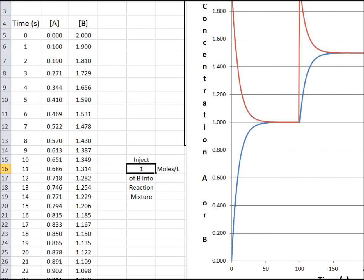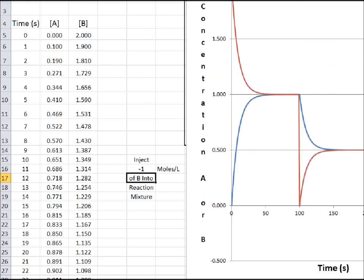Now, I know you can't inject negative moles, but let's suppose we pulled one mole per liter of B out. Instead of putting one in, let's make it minus one. And now we've taken it out of equilibrium. And in order to get back to equilibrium, the A has to decrease and the B has to increase.